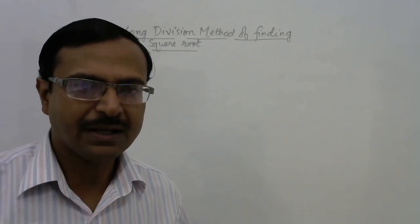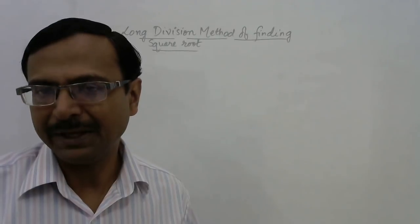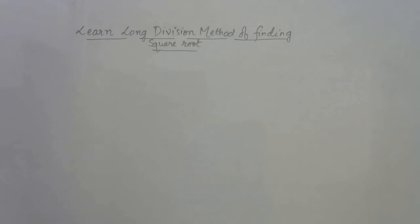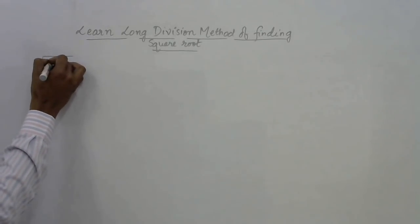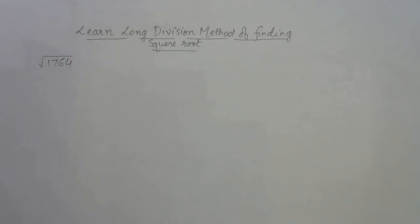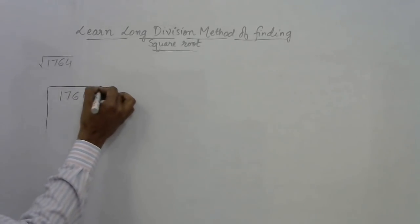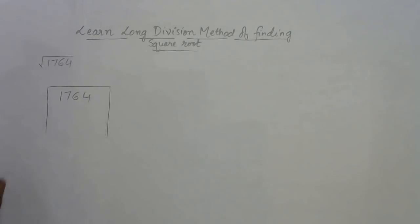I have given a lot of methods and tricks to find the square root of perfect squares easily through shortcuts, but long division method is something you cannot avoid. Let's learn this method from the beginning. I'm taking the first example: suppose we need to find the square root of 1764.